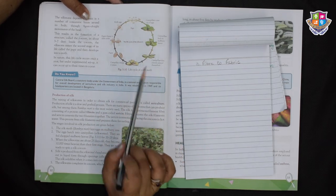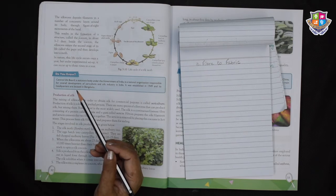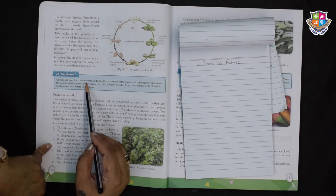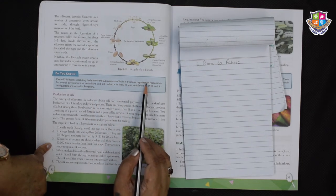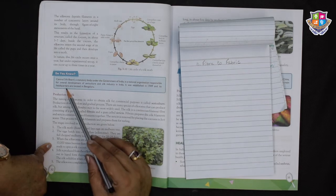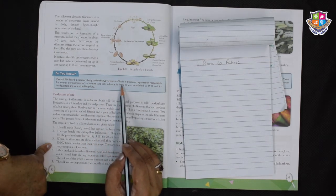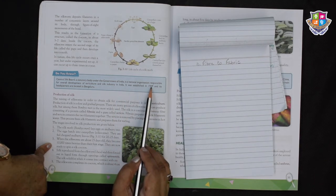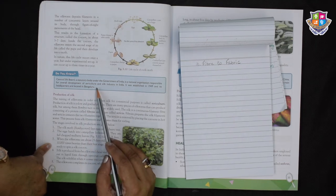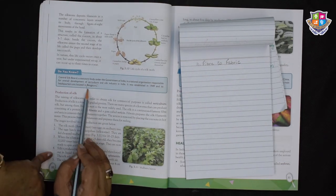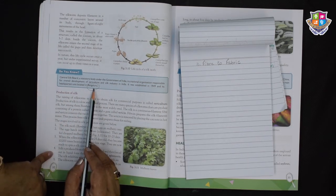So this is a life cycle of a silk moth. I want you to draw it. Now let's see what this do you know has in store for us. The central silk board, a statutory body under the government of India, is a national organization responsible for overall development of sericulture and silk industry in India. It was established in 1949 and its headquarters are located in Bengaluru, the capital of Karnataka.